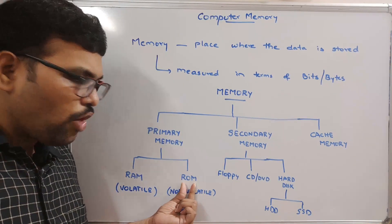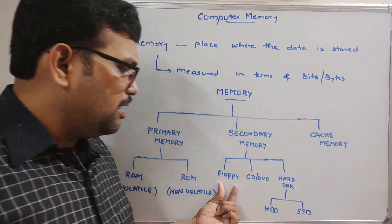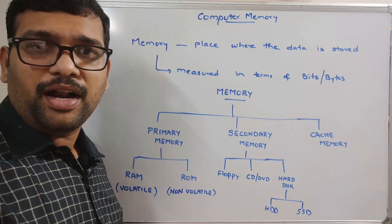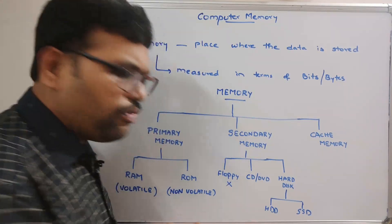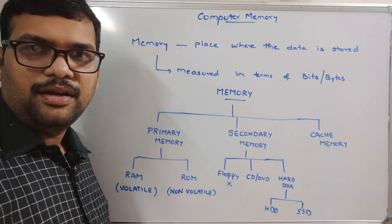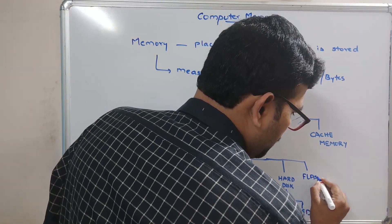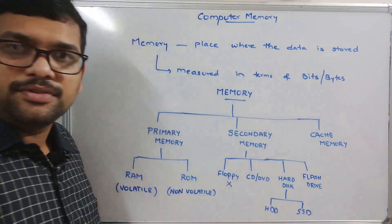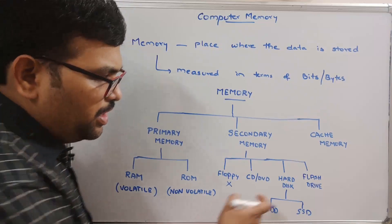A floppy disk is an external device — we need to place it into a floppy drive to store data. Nowadays almost no one uses floppy disks. CD and DVD drives are also used very little these days. We can also categorize flash drives as secondary memory — they offer somewhat more memory than floppy or CD but less than a hard disk.